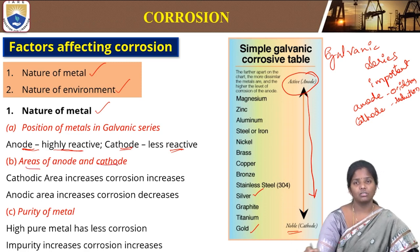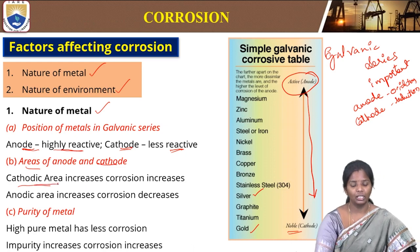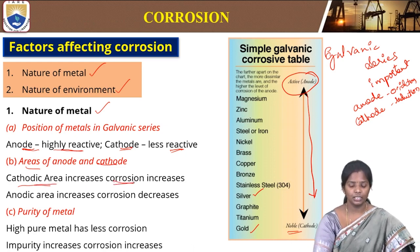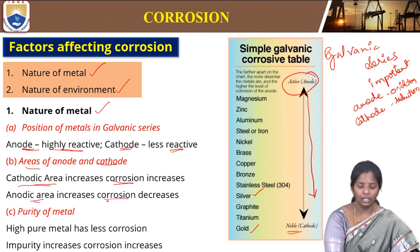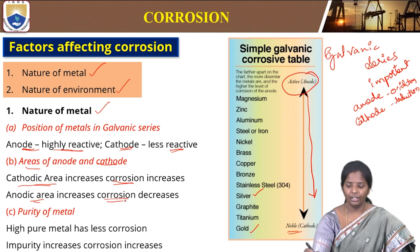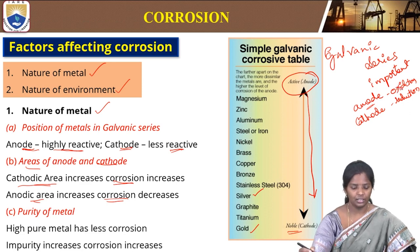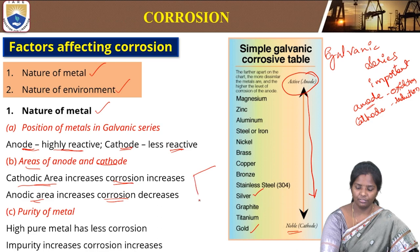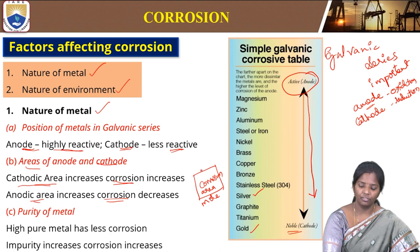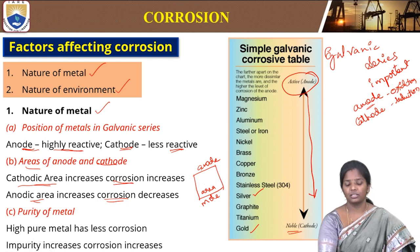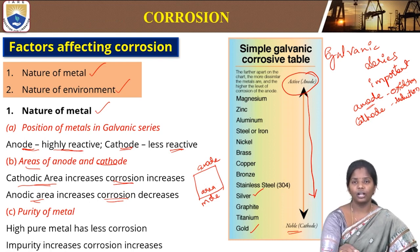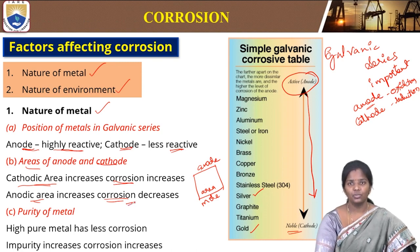The areas of anodes and cathodes is also important. If the cathodic area increases, corrosion will increase. If the anode area increases, corrosion decreases — because when the area of the anode is high, the sufficient reaction has to take place to cover the complete area, so corrosion will reduce to some extent.